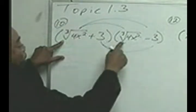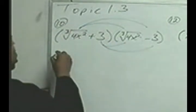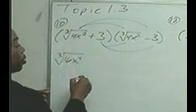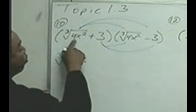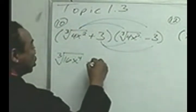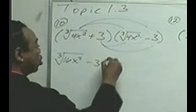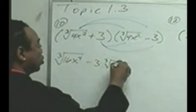Multiplying the cube root of 4x squared times the cube root of 4x squared gives us the cube root of 16x to the 4th power. Then, the cube root of 4x squared times negative 3 gives us negative 3 and the cube root of 4x squared.